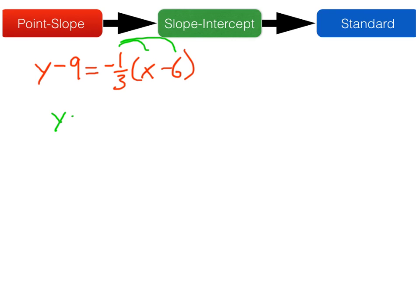So that leaves y minus 9 is negative 1/3 x. And now, negative 1/3 times negative 6, that should be positive 2. And then we'll add 9 to both sides. So now we have slope-intercept form.